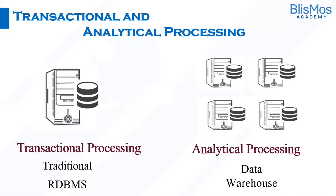So for transactional processing we use traditional RDBMS, and for analytical processing we have systems called data warehouses. To summarize: transactional processing is supported by relational database management systems, and analytical processing is supported by data warehouses. Thank you and have a wonderful time.